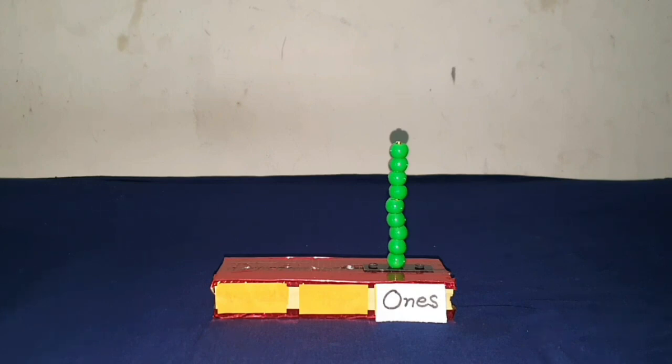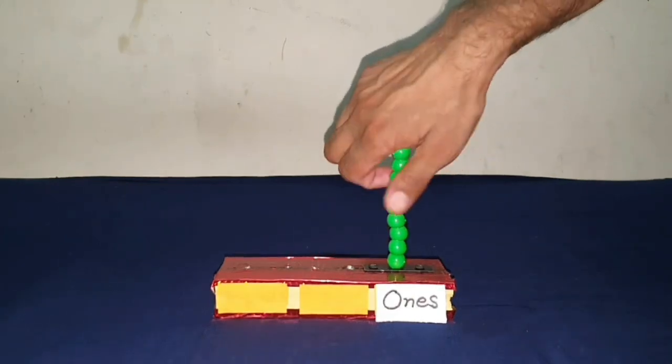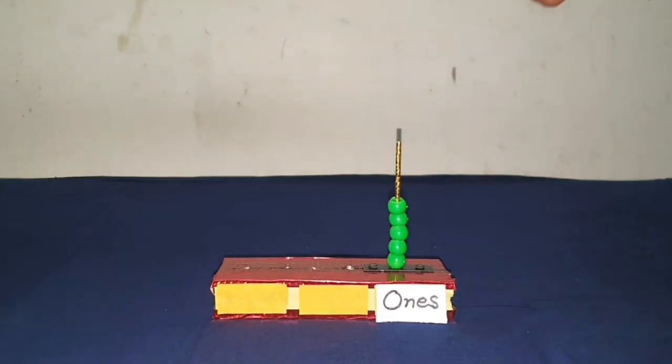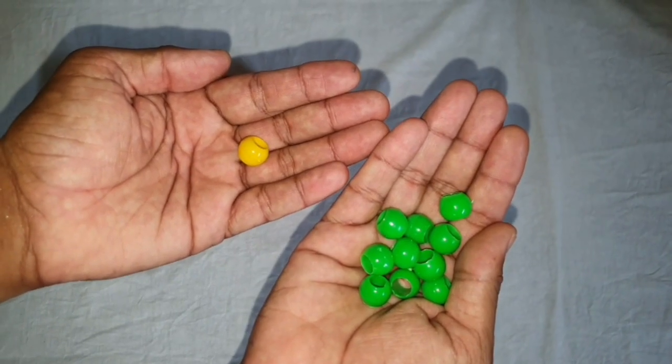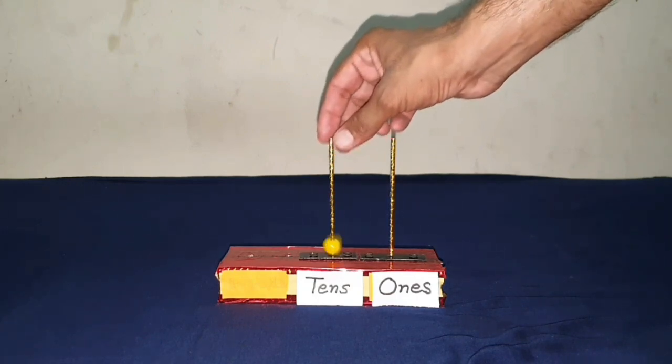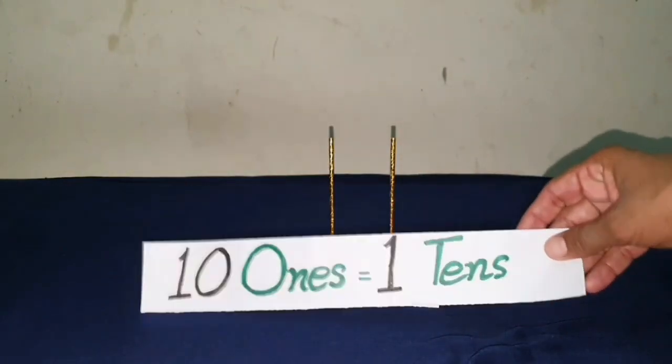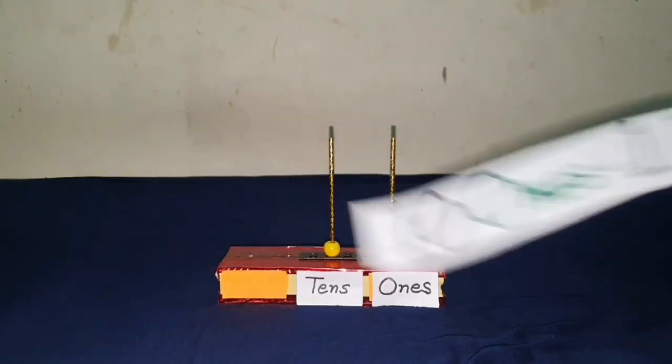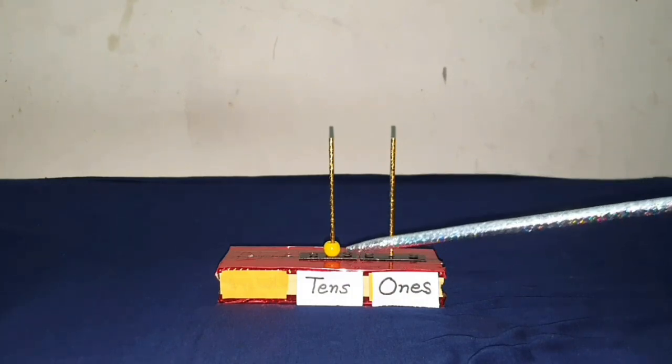When we put the tenth bit in the rod, it falls down. Instead of tenth bits, we will put one bit in the next rod naming tens. Put one bit in rod of tens because ten ones are equal to one ten. This shows that the smallest two digits number is ten.